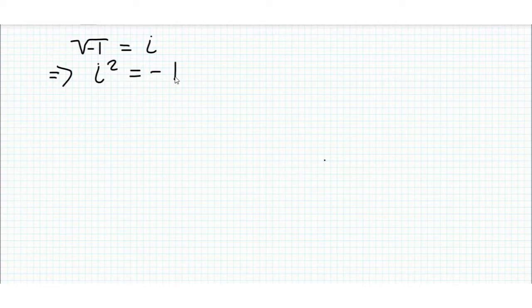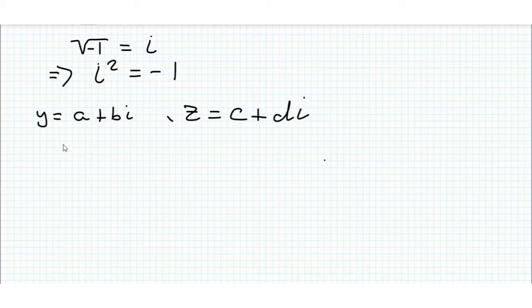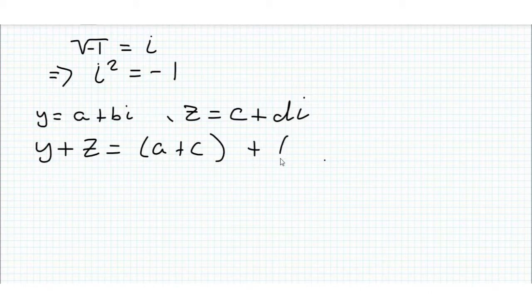useful when multiplying and dividing these numbers. First we'll look at addition. If we got a complex number y equal to a plus bi and a complex number z equal to c plus di, then y plus z is equal to a plus c plus b plus di.